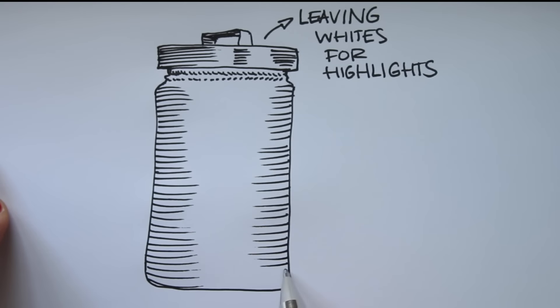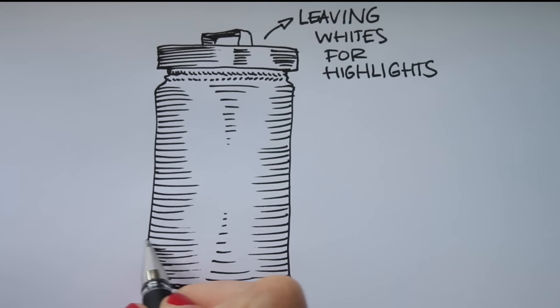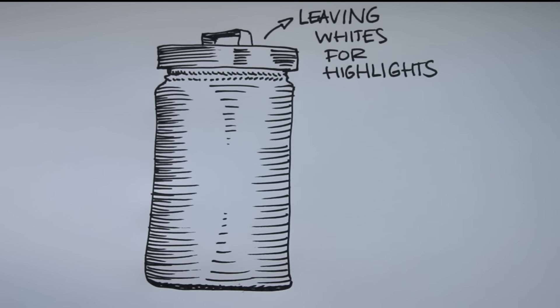The bottom of the jar is quite dark, so I cross hatch my lines to make that part darker. Also on the left side, I add more lines for extra density.